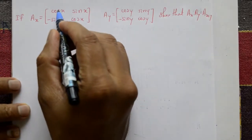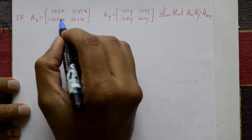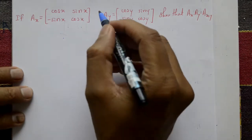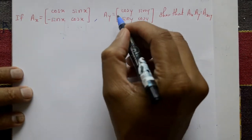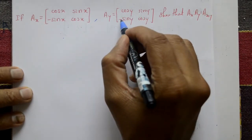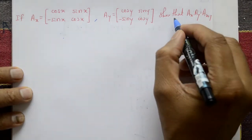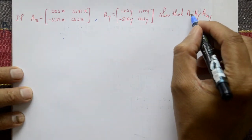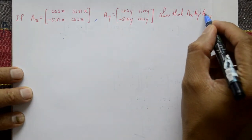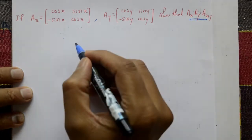If A(x) is equal to the matrix [cos x, sin x; -sin x, cos x] and A(y) is equal to the matrix [cos y, sin y; -sin y, cos y], show that A(x) into A(y) is equal to A(x plus y).